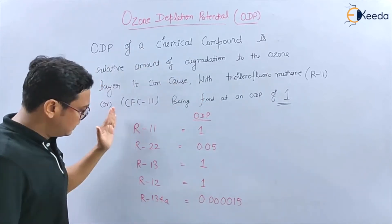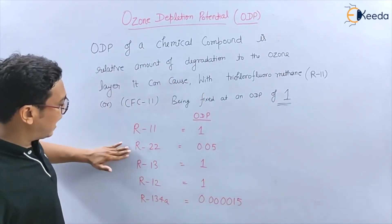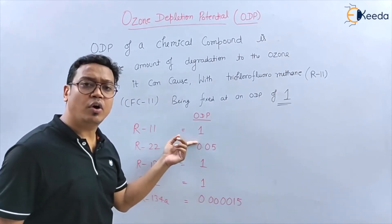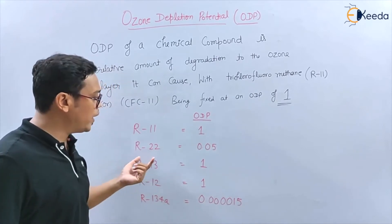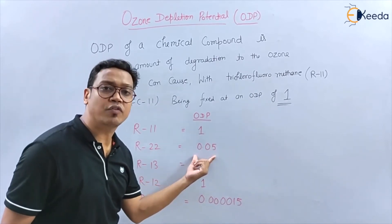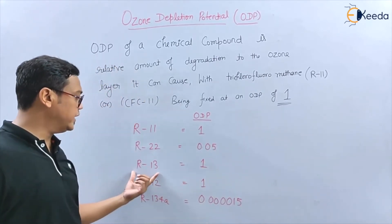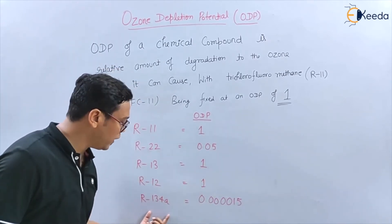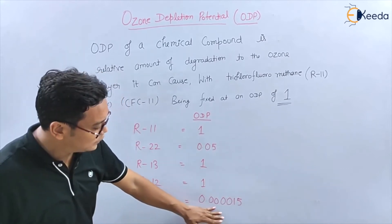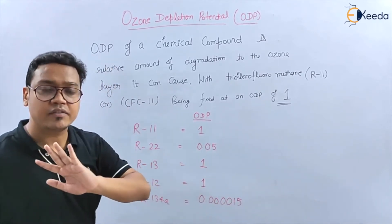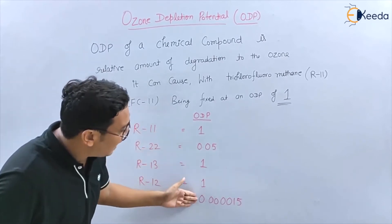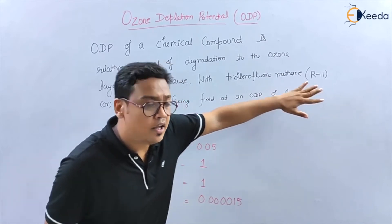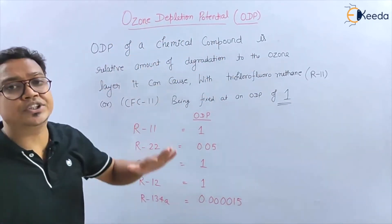Now, here are some examples: R11 has an ODP of 1, R22 has an ODP of 0.05, R12 has an ODP of 1, and R134a has an ODP of 0.0000. These potentials are all relative to R11. So this is the Ozone Depletion Potential.